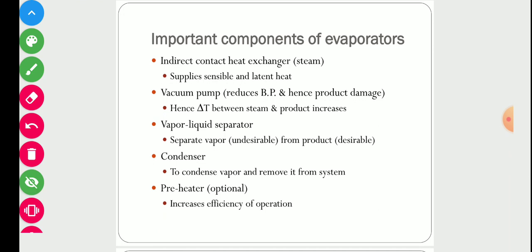Different types of evaporators are used in the evaporation process. Here are some common components. First is the heat exchanger, used to supply sensible and latent heat to the solution — normally steam is used for heating. Second is the vacuum pump, used to reduce boiling point and hence reduce product damage.